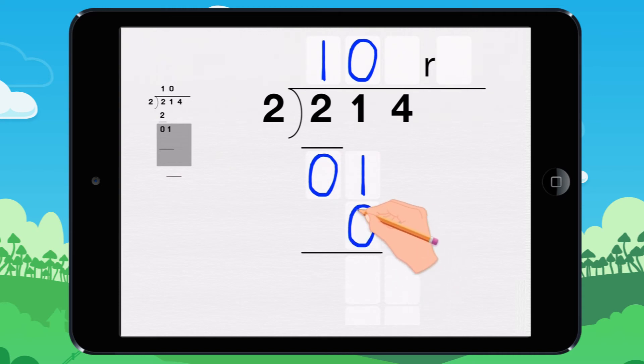We need to find the remainder. 1 minus 0 equals 1. The remainder is 1.